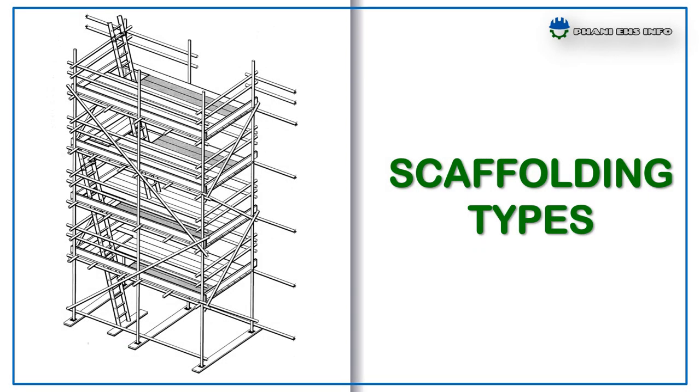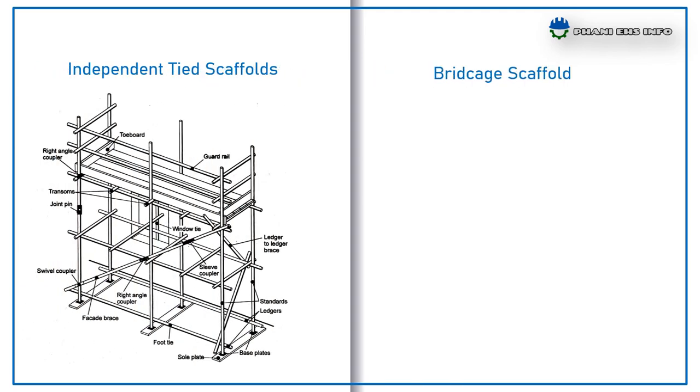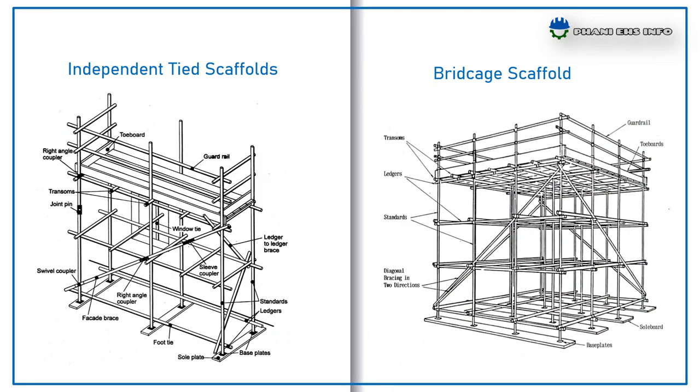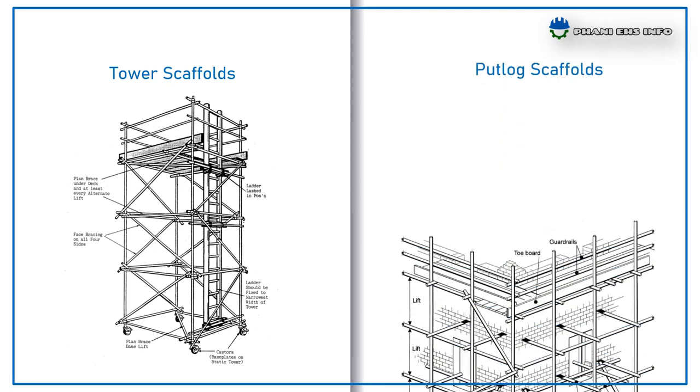Types of scaffoldings. There are mainly 4 types of scaffoldings being used: 1st, independent tied scaffolds; 2nd, birdcage scaffold; 3rd, tower scaffolds; 4th, Kwikstage scaffold.